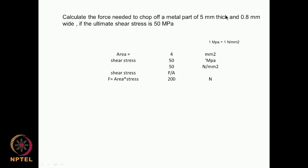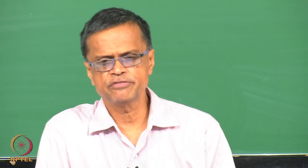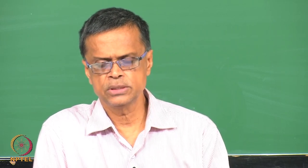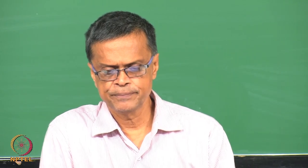Area is 5 × 0.8 mm² and shear stress is 50. I have converted MPa into Newton per mm² — since 1 MPa equals 1 Newton per mm². Shear stress is force divided by area, so force equals area times shear stress. We multiply 50 × 4, so we require 200 Newton to chop off this material. You need to understand these conversion factors between Newton and MPa per mm².